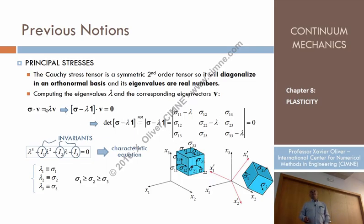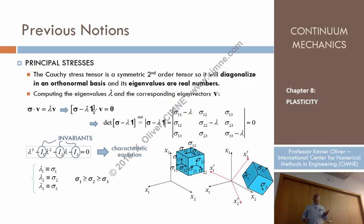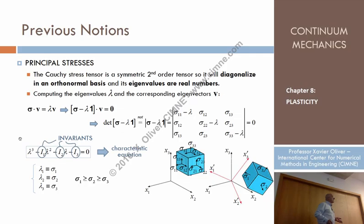How do we solve that? There is the eigenvalue problem, which consists of finding what values of V — some vectors — satisfy sigma times V equals lambda times V, where lambda is a certain scalar parameter. This equation can be written as: the stress sigma minus lambda times the unity tensor, times V, equals zero. This is a homogeneous system of equations, and for it to have solutions, the characteristic determinant of the equation — the determinant of this matrix — has to be equal to zero.